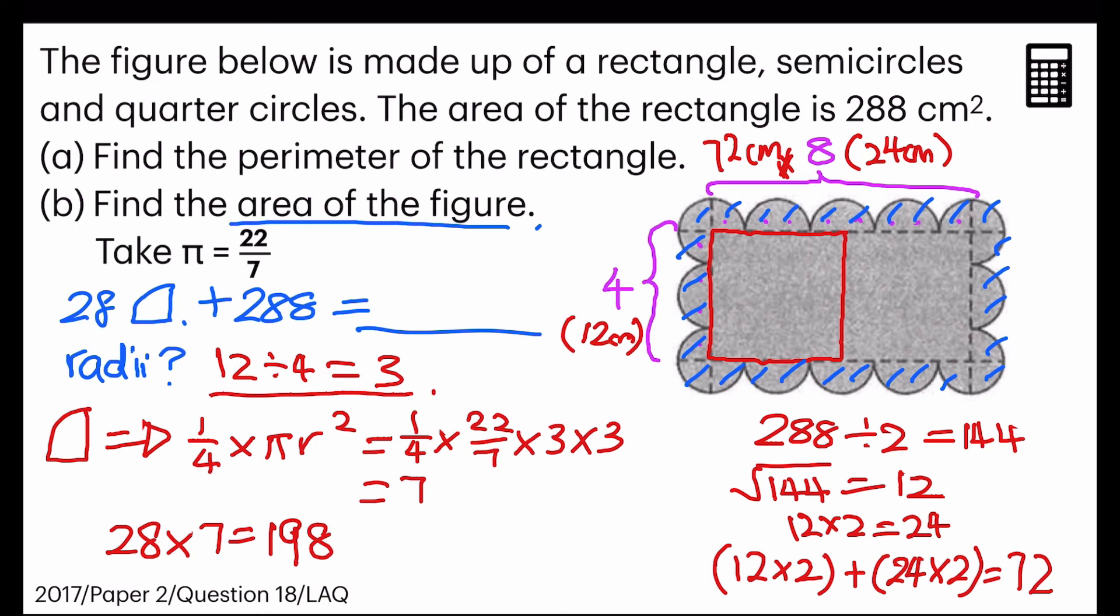So the final answer, 198, it's the quarter circles all around it, but they want the area of the figure. So it's 198 plus 288. So that would give me 486 square centimeters. And there we have our final answer. Thank you.